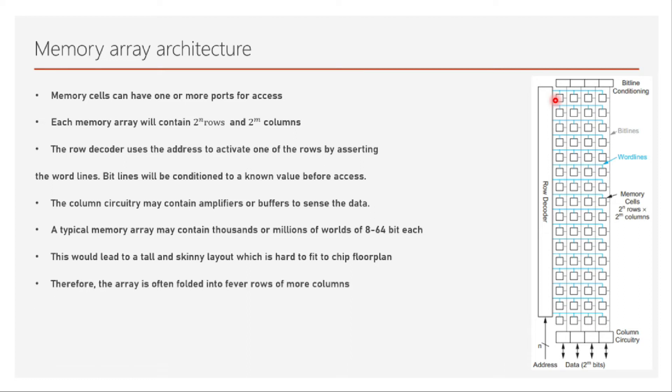Therefore the layout and the array is often folded into fewer rows of more columns. Now what you can do is you can fold it over here, make a two fold and keep it next to this thing side by side so that it becomes properly rectangular. If that happens it is very good for the layout because it becomes a rectangular chip.